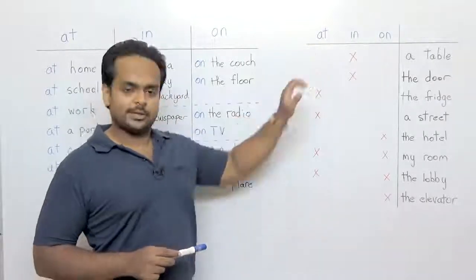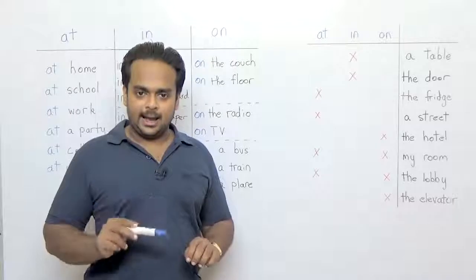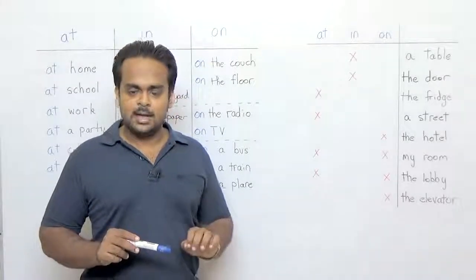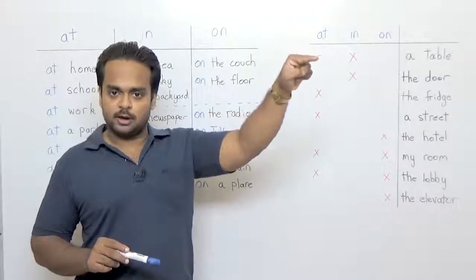So first what's the difference between them? The difference is this. The word at shows us the location of a person or thing. It's kind of like pointing to a place and saying over there.